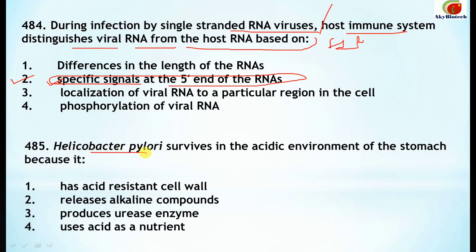Question 485: Helicobacter pylori survives in the acidic medium of the stomach because it produces the urease enzyme. This is the correct option.